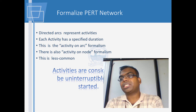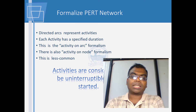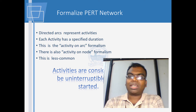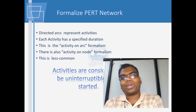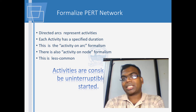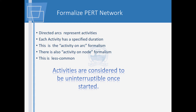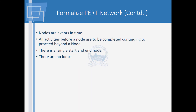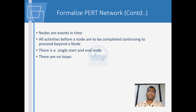We consider activities as uninterrupted once they start. However, any activity can get interrupted — due to strikes, floods, or because the owner or contractor has changed priority, finding that certain other works would be more profitable and suit cash flow. Nodes are events in time, and all activities before a node have to be completed before work can flow out of that node into the next.